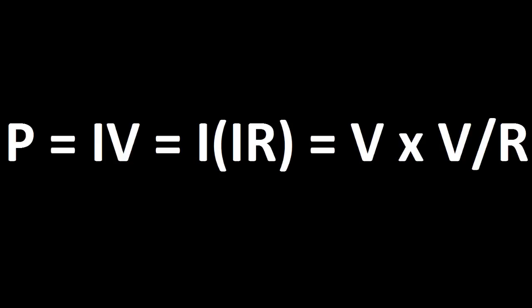There are three different equations to find power. There's P equals IV, there's I times IR, which is replacing V with IR because V equals IR, then there's V times V over R, because I equals V over R.